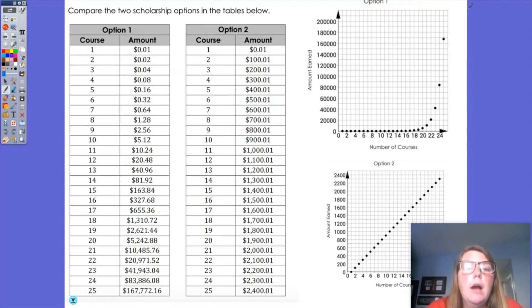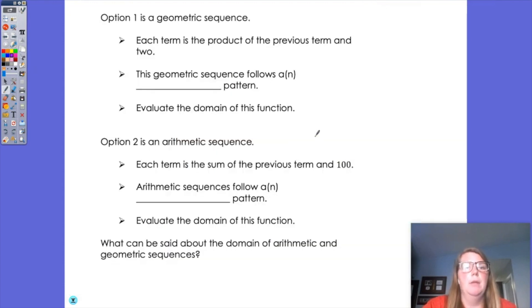Option number two, or for option number two, I would still have more money until that time. So I guess choosing those two scholarships would depend on how many courses you plan on taking. Obviously, I would want to take more courses because I could end up with option number one is $167,000, and I would love to have that.